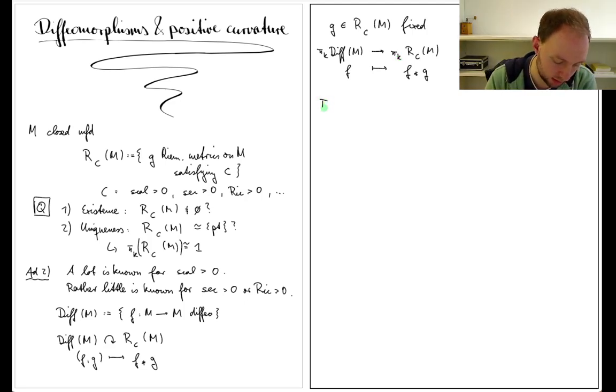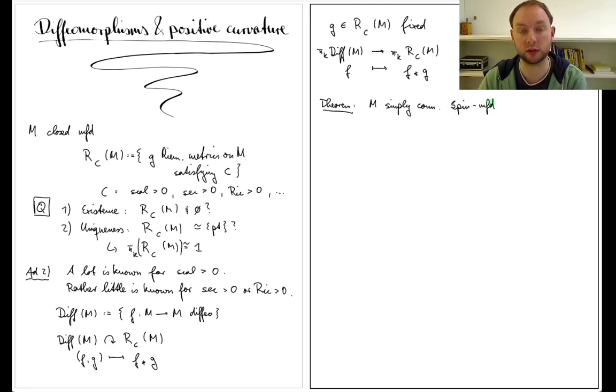My main result in this article is the following. If M is a simply connected spin manifold—so there is some additional condition on the tangent bundle of the manifold—and the dimension of M is D. Next, assume we have a k ≥ 1 that satisfies the following inequality.